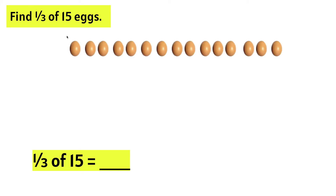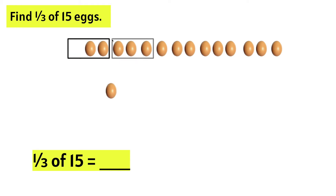Let's start by making 15 eggs. We only need one-third of them. Let's go ahead and separate them into three eggs. Now, we only need one out of every three eggs. We need three more eggs because it says one out of every three, or one-third.